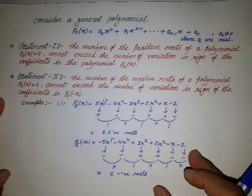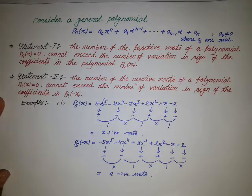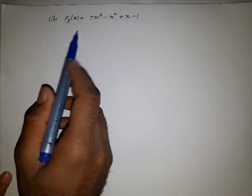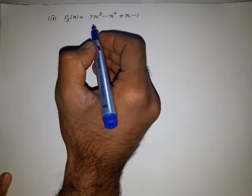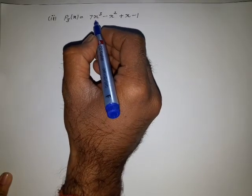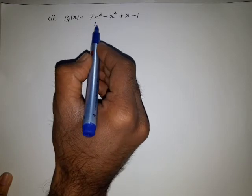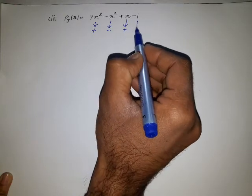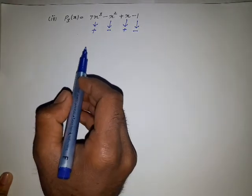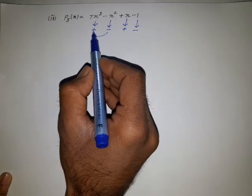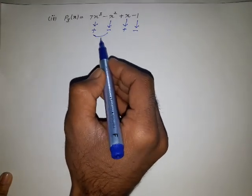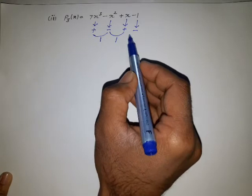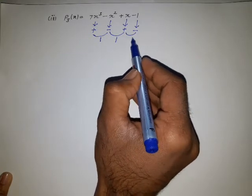Now we take another example: a polynomial of the third degree. We find the sign variation. The first term is positive, the second is negative, the third is positive, and the last term is negative. There is a variation from positive to negative: one positive root. A variation from negative to positive: one more positive root. A variation from positive to negative: one more positive root. We find three positive roots.